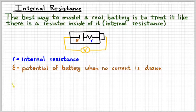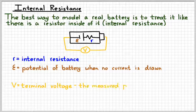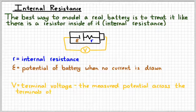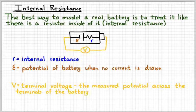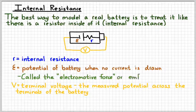And then if you take a voltmeter and you touch it to the terminals on either side, that would give you the actual terminal voltage. The measured potential of the battery when it has a current being drawn from it. So you might be wondering what's with the symbol E. It's a script E. And it's short for electromotive force or EMF.